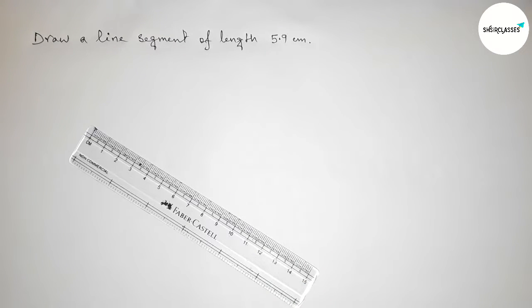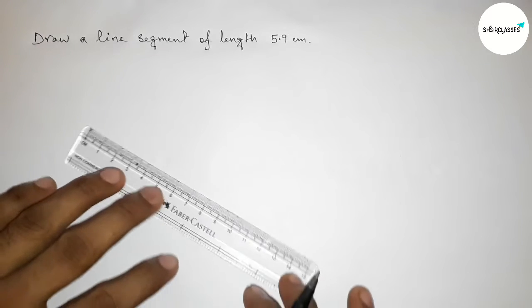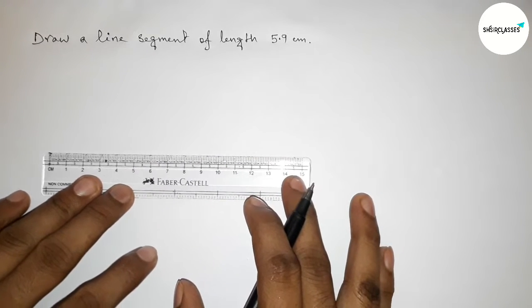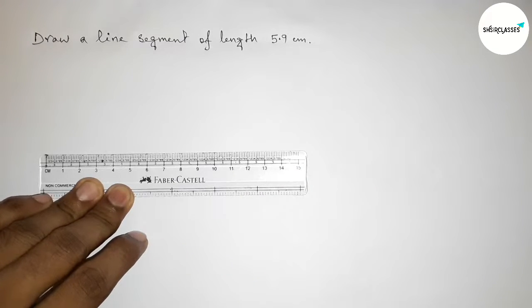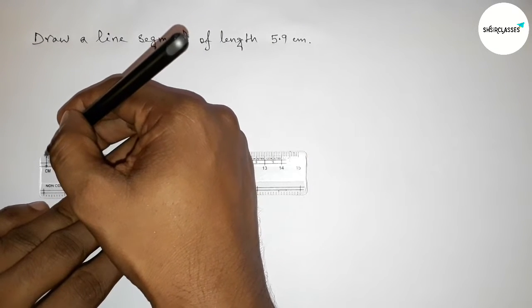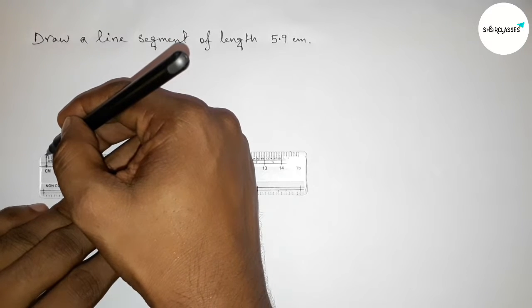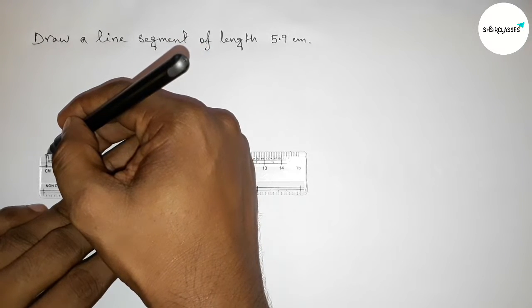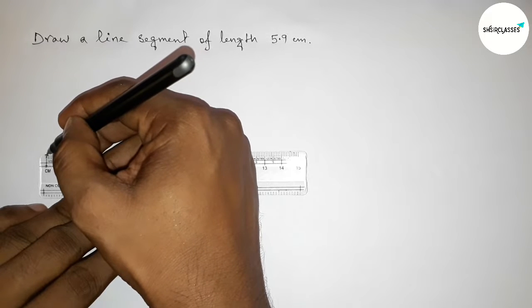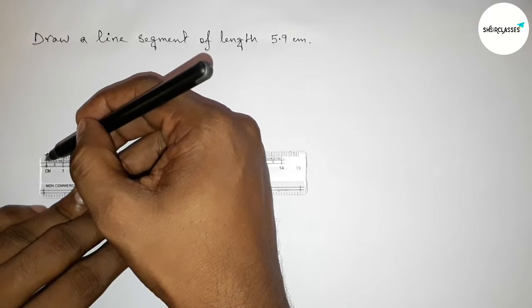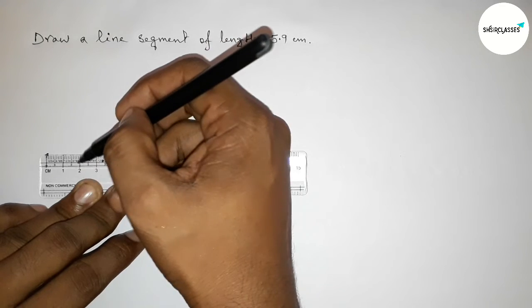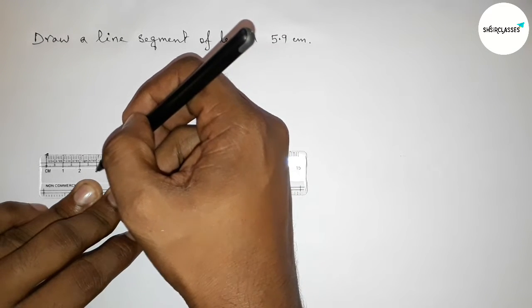First of all, with the help of scale we have to first measure 5.9 centimeter. So first taking here the starting at zero. First marking here the starting zero centimeter, now counting: this is zero, one centimeter, two centimeter, three centimeter.